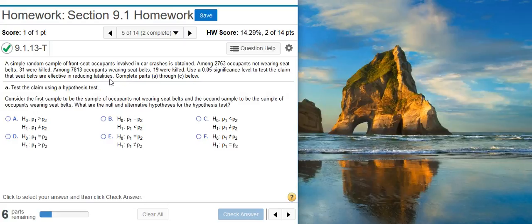Back here in the problem statement, we can see we're testing the claim that seatbelts are effective in reducing fatalities. We have two groups: one group who was not wearing seatbelts, the other group who was wearing seatbelts. We're supposed to consider the group not wearing seatbelts as the first sample, and the group wearing seatbelts as the second sample. That's great, because now we see that there's no semblance of equality that's being made in the claim. It's just one is greater than the other. So we can adopt the claim as our alternative hypothesis.